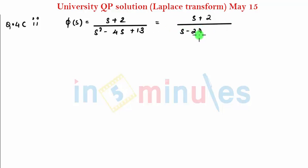I can write S minus 2 the whole squared plus 13 minus 4. So I get phi of S as, there is S plus 2 here, I can write S minus 2, I wanted minus 2, so plus 2 and plus 2 gives me 4, divided by S minus 2 the whole squared plus 9.